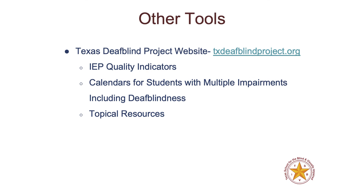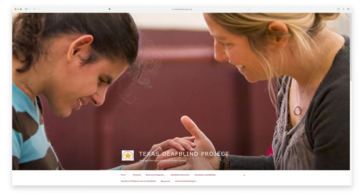Now we're going to look at the Texas DeafBlind Project website, where I'll show you where the IEP quality indicators, the calendars for students with multiple impairments, and the topical resources page are located, as well as some other resources. I'm going to navigate there to txdeafblindproject.org.